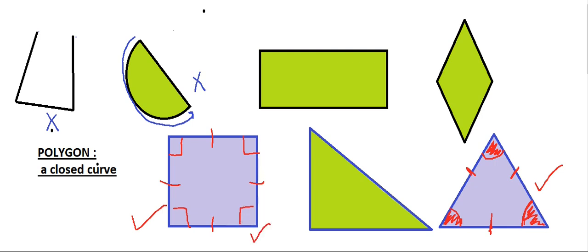In a rectangle, it does not satisfy the property of a regular polygon. The two opposite sides are the same — this is called the length. All four sides are not the same, although the angles are 90 degrees each. So the angles are 90 degrees but the sides are not of equal measure, so it is considered an irregular polygon.